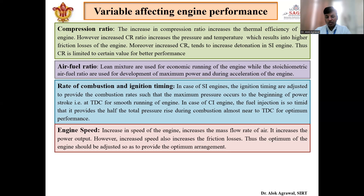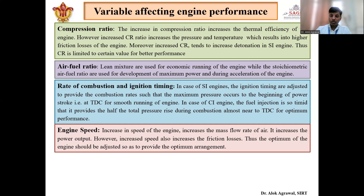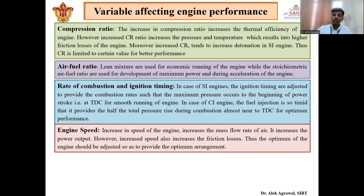Another variable is engine speed. With an increase in engine speed, the mass of air coming inside the combustion chamber increases, which increases the power output. But this also comes with a cost — it increases frictional losses. Frictional power keeps increasing as we increase engine speed. So there is an upper limit beyond which we cannot increase engine speed, because although brake power increases overall, it will harm the engine components.